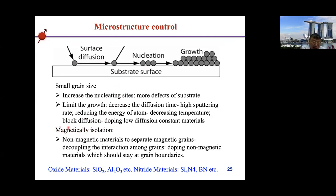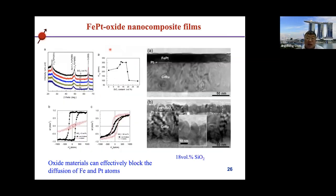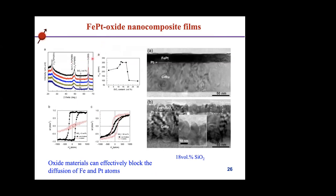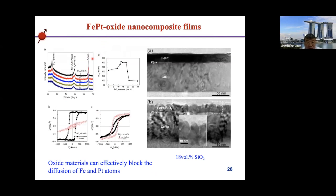For non-magnetic interaction among grains, we need to isolate magnetic grains using non-magnetic materials at the grain boundaries, decoupling the interaction. We need non-magnetic materials that stay at the grain boundary and do not form alloys with the L10 FePt. Oxide and nitride ceramic materials are good candidates because they have very low diffusion rates and can magnetically separate the magnetic grains. We first tried silicon oxide, which can effectively block Fe and Pt diffusion. However, when doping SiO₂ into FePt, the magnetic properties immediately degraded.